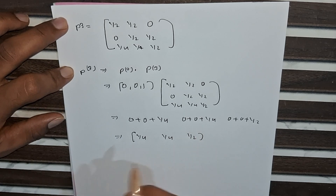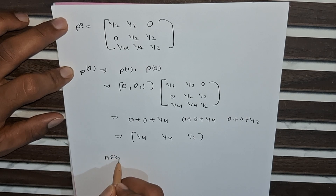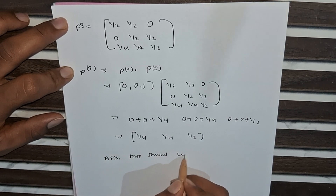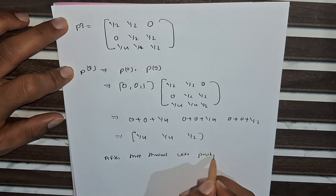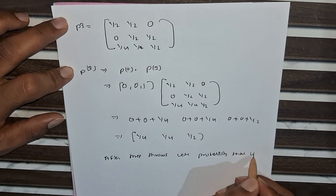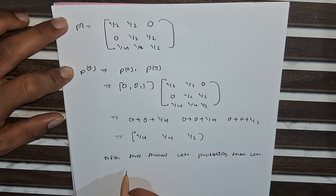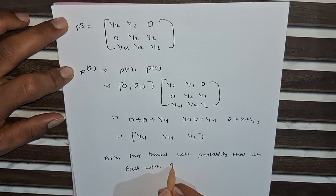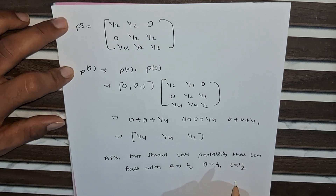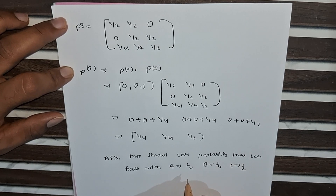So after three throws, the probabilities are: the ball is with A = 1/4, B = 1/4, and C = 1/2. This is our final answer. Thank you for watching our video. Please subscribe to Express Beauty for All.